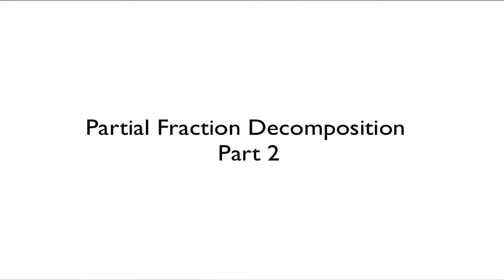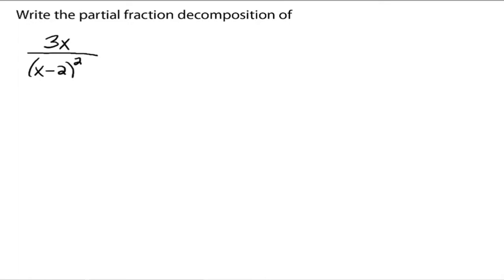This is part two of the partial fraction decomposition. The first video covered when your denominator had linear factors. Now we're going to talk about this situation where we have a linear factor, x minus two, but it's repeated. This is called repeated linear factors.